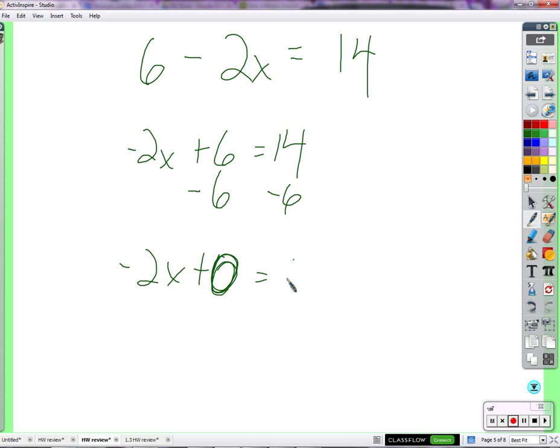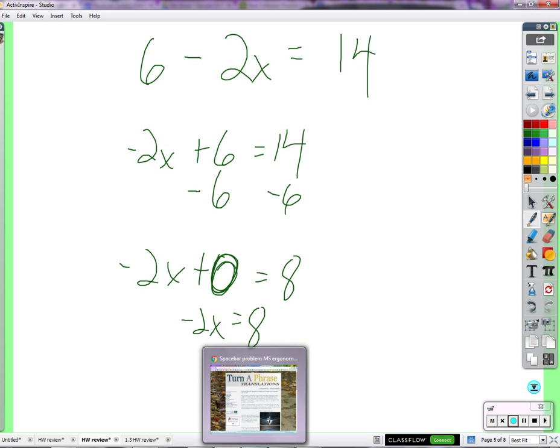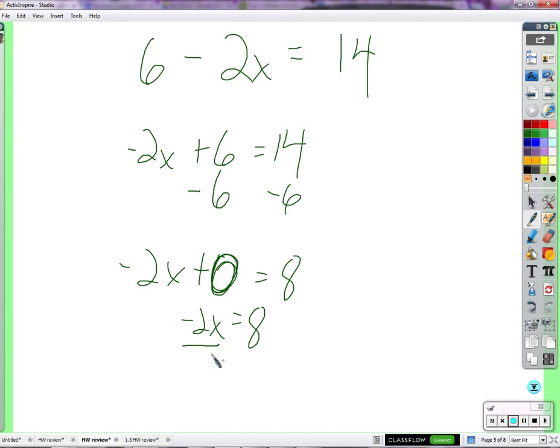Subtract 6 on the other side. We have 8. And then you divide by negative 2. Divide by what? Negative 2. Now we're dividing by negative 2. Robert divided by 2. That left us with a negative. If you divide by negative, negative divided by negative is what? Positive. Positive. Oh, yeah. Negative 2 divided by negative 2 is a positive 1x. And an 8, positive 8 divided by negative 2 is a negative 4.